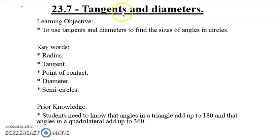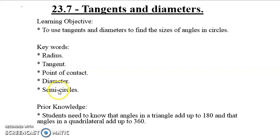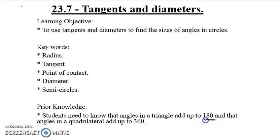Today's topic: we look at the tangent and the diameter. The learning objective is to use tangent and diameter to find the sizes of angles. Before we can solve this, students must know that the sum of angles in a triangle is 180 degrees, and the sum of angles in a quadrilateral is 360 degrees.